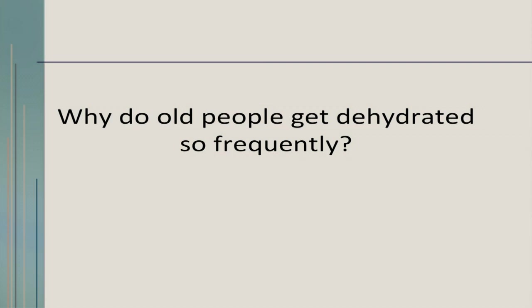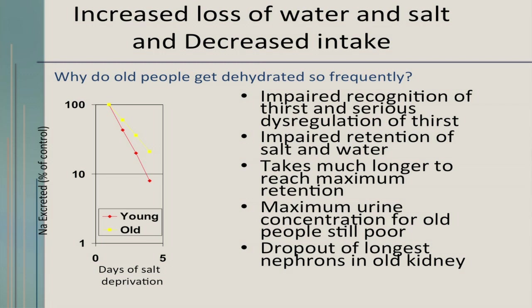Why do older people get dehydrated so frequently? They may not even sense that they are thirsty — there's impaired recognition of thirst and impaired retention of salt and water when they need to. The maximum urine concentration is poor, the nephrons become scarred, and there's increased susceptibility to dehydration. Many patients fail to drink water because they don't like the taste, so we talk to them about other liquids or adding fruit to change the taste. If you're caring for somebody with cognitive impairment who doesn't express thirst, think about yourself: if you're thirsty, offer the elderly patient something to drink.